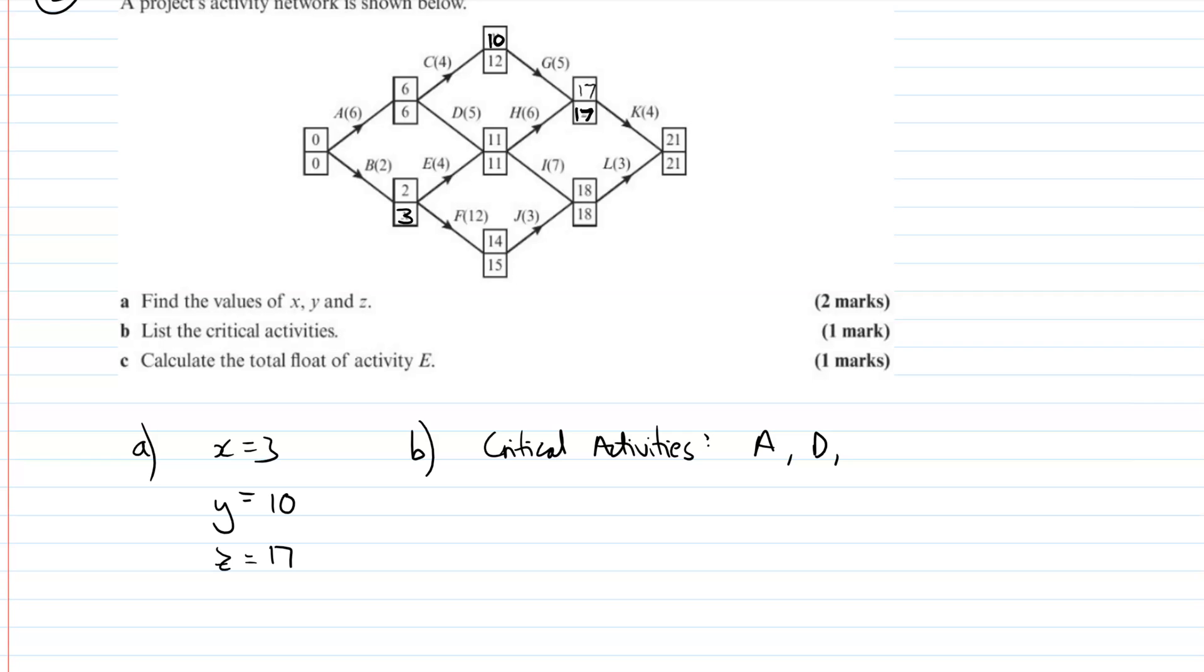H is critical. 11, 11, 17, 17, and the 6 is the difference between them. So H is. I is also critical. 11, 11, 18, 18, and 7 is the difference between them. J not critical. 18 and 18 might be, but this is not, and the 3 is not the difference. J. K is critical.